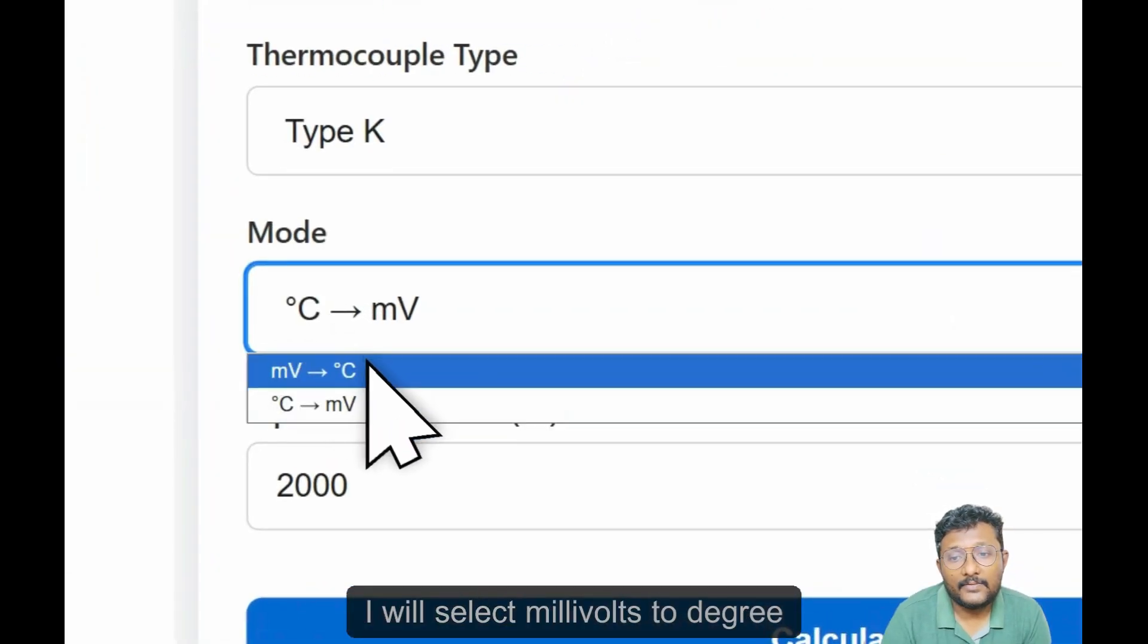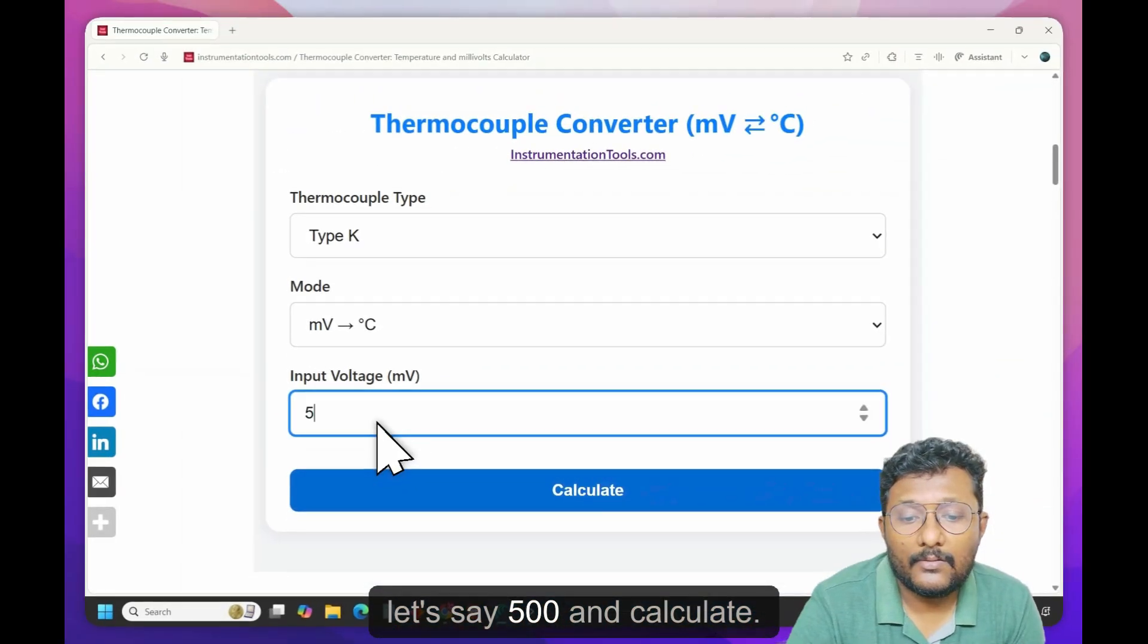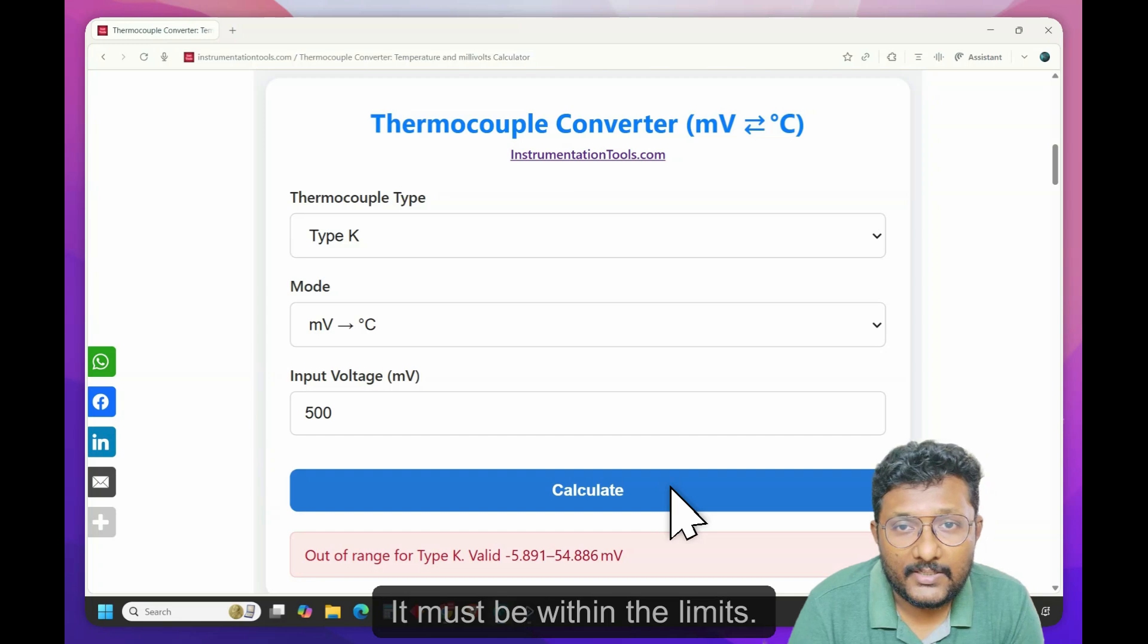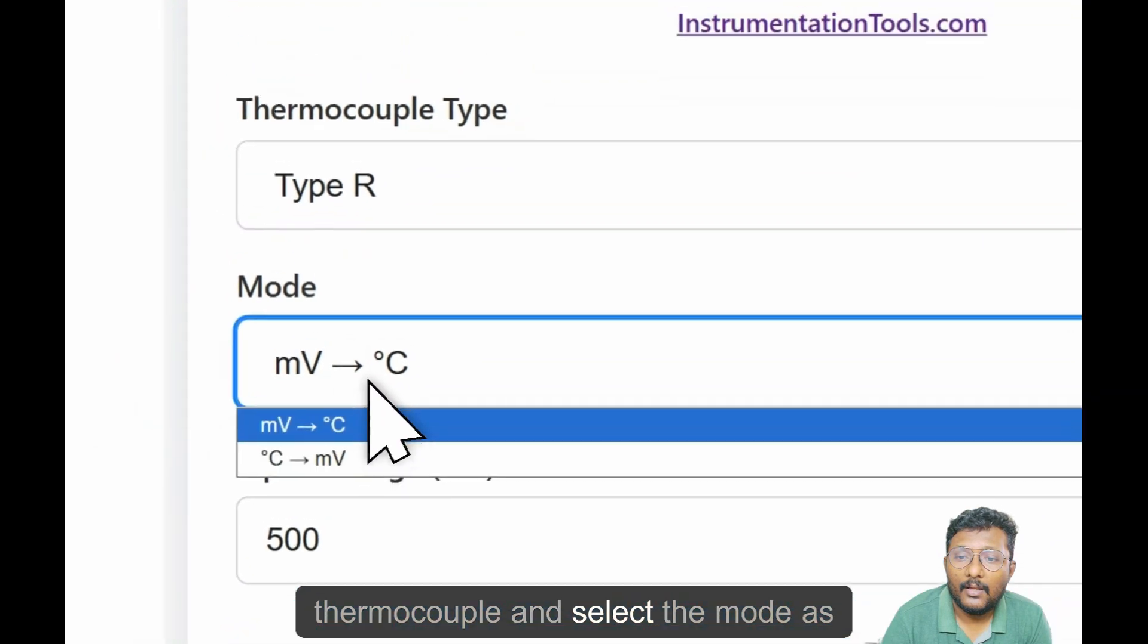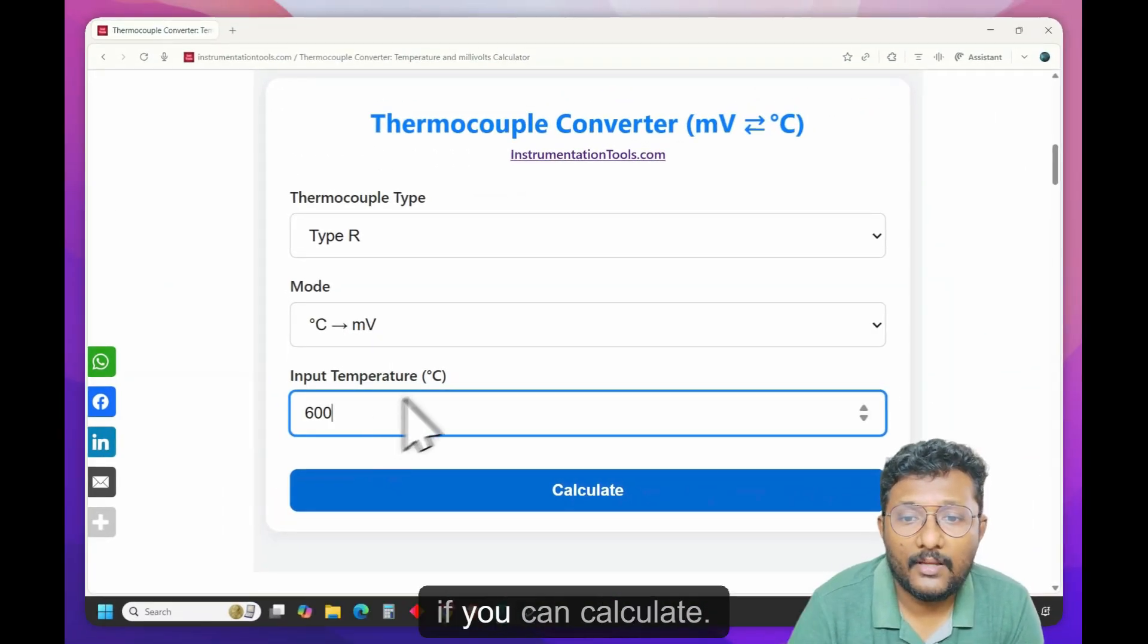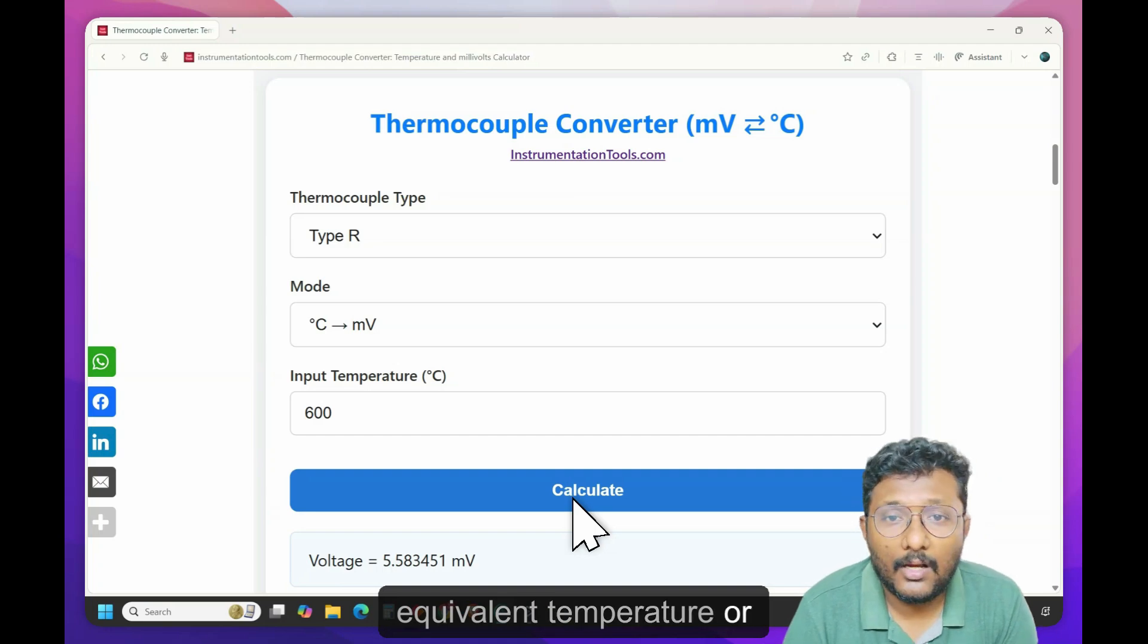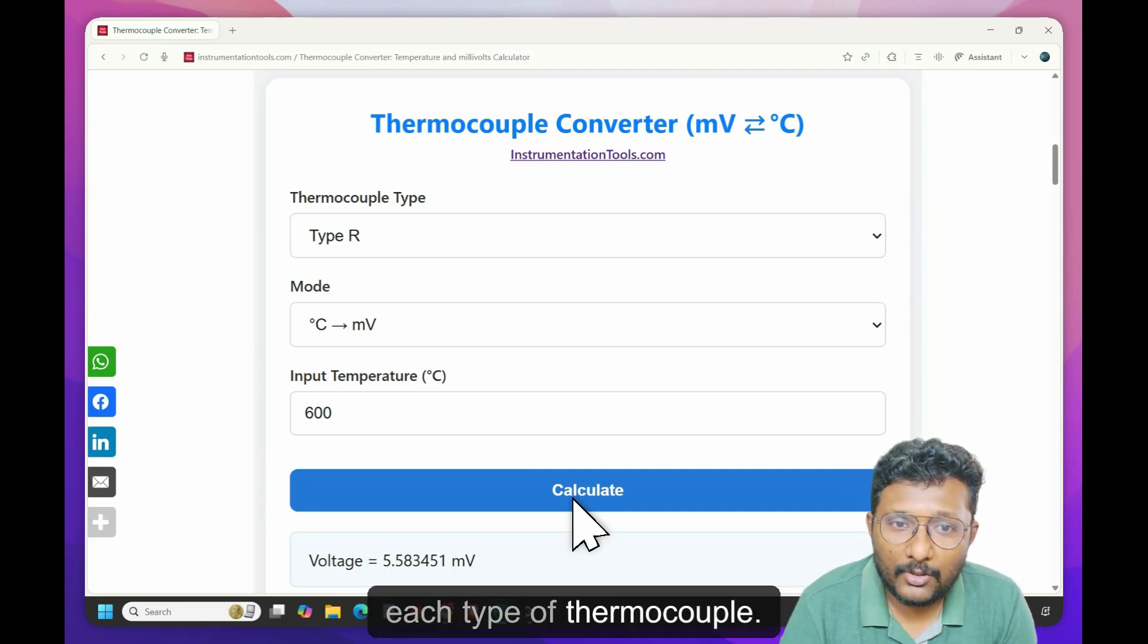I will select millivolts to degree centigrade and then I will enter, let's say 500 and calculate. Again, out of range. It must be within the limits, right? You can select different thermocouple and select the mode as required and enter the temperature. Calculate. Like that, you can calculate the equivalent temperature or equivalent millivolts output for each type of thermocouple.